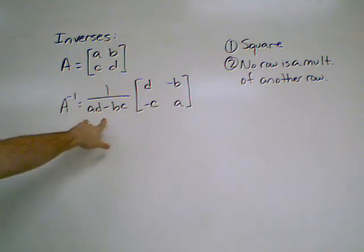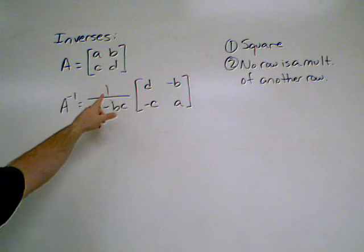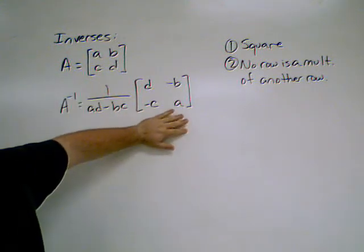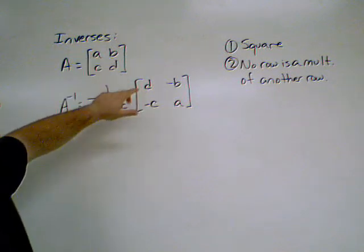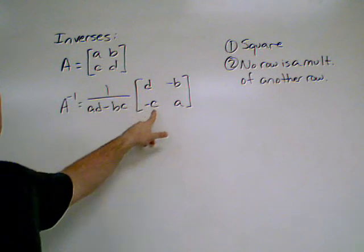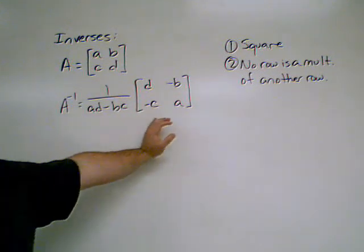We start off with a fraction, 1 over the product of ad minus the product of bc from our original matrix. Then we've changed our matrix around a little bit. A and d have now switched places, and then b and c have stayed put, but they are now negative. So this is how we calculate it.